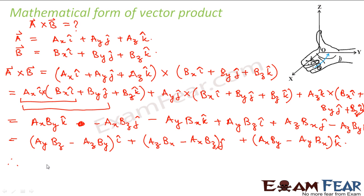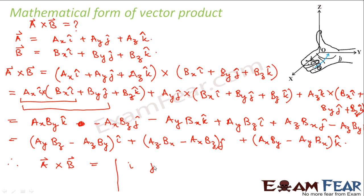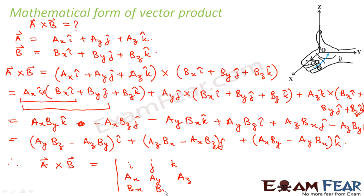This result can be written in the form of a determinant: a cross b equals the determinant with first row i, j, k; second row aₓ, aᵧ, a_z; and third row bₓ, bᵧ, b_z. This is how the cross product of two vectors is represented mathematically.